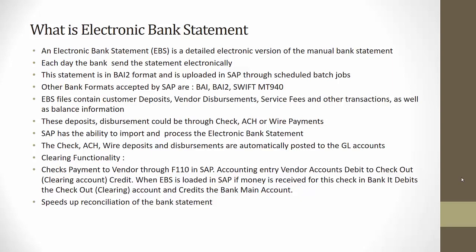The EBS contains details about the opening bank balance, details of checks issued to the vendor, details of ACH payments and wire payments made to vendors, details of credit card money received from the bank, money received from customers, checks received from customers, and any transaction or service fees levied by the bank. Checks, ACH, and wire deposits are automatically posted by the EBS, and clearing accounts are also cleared by the EBS.